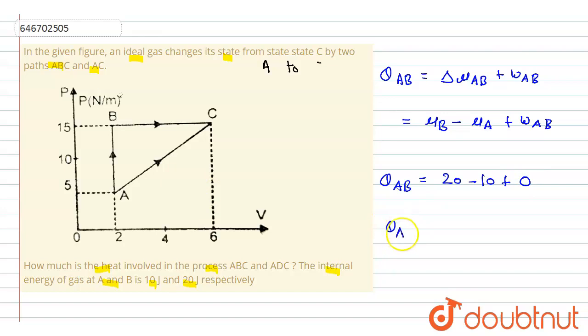Finally, we get Q_AB is equal to 10 joules, and this is the required answer for this question. Thank you.